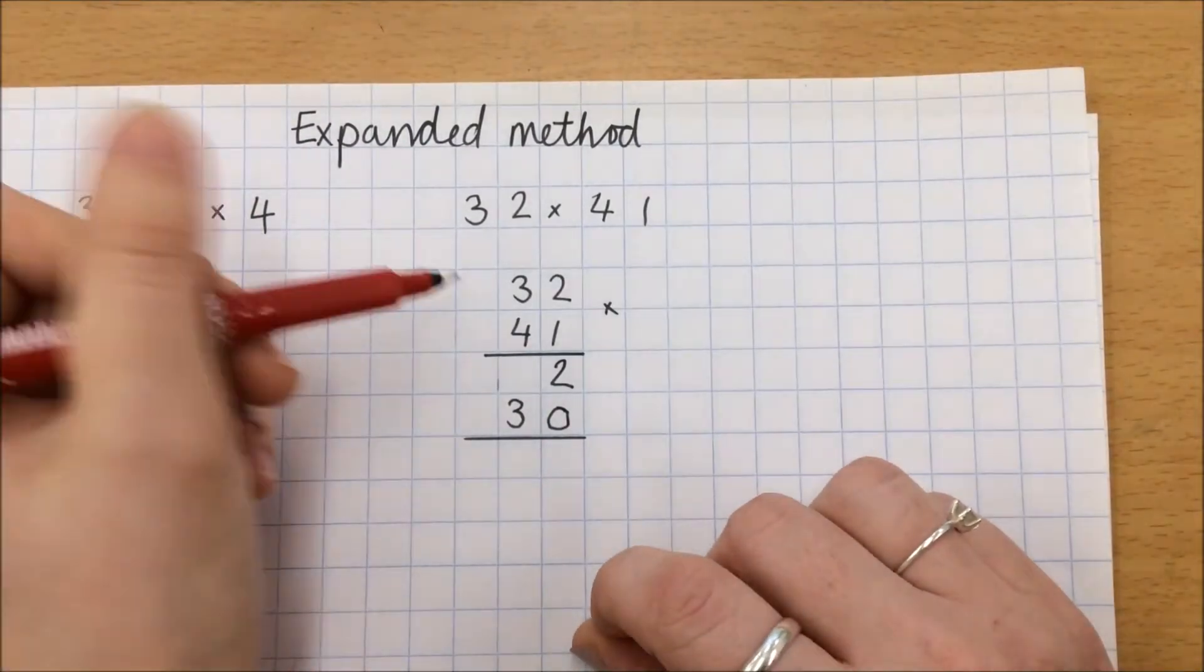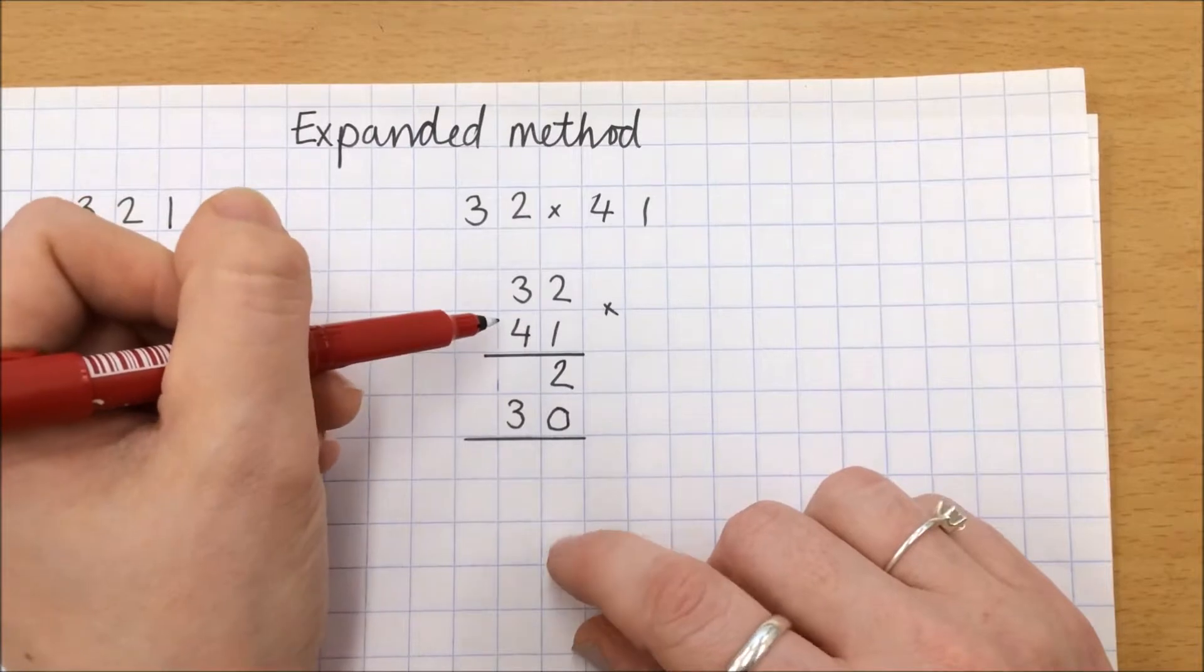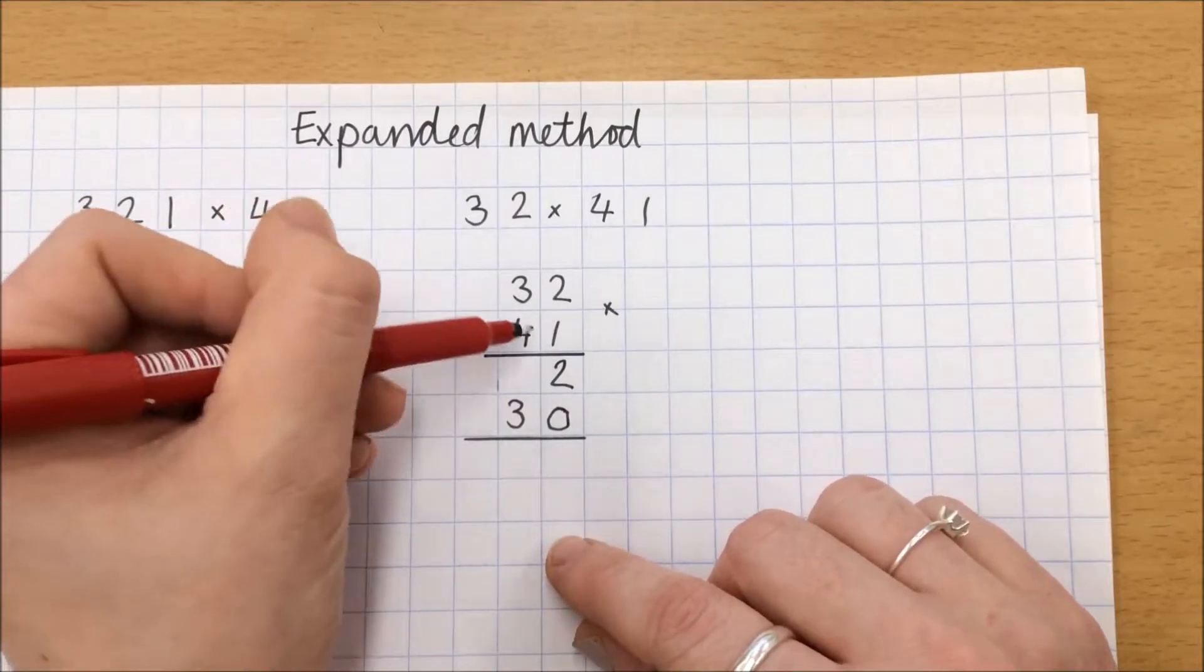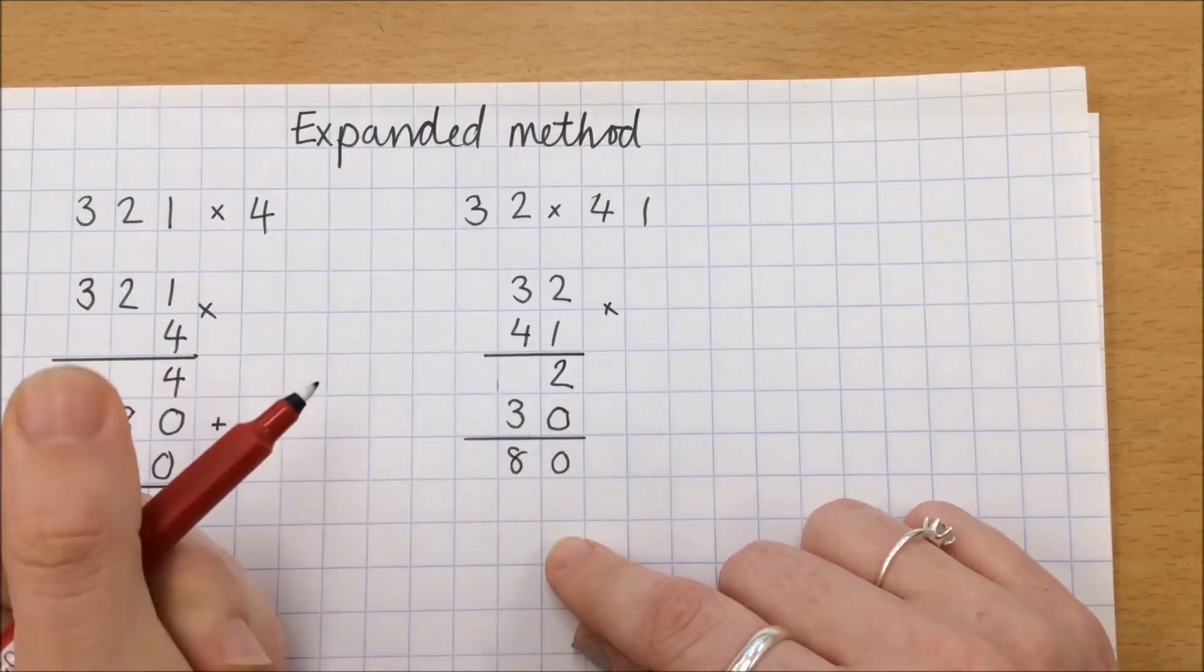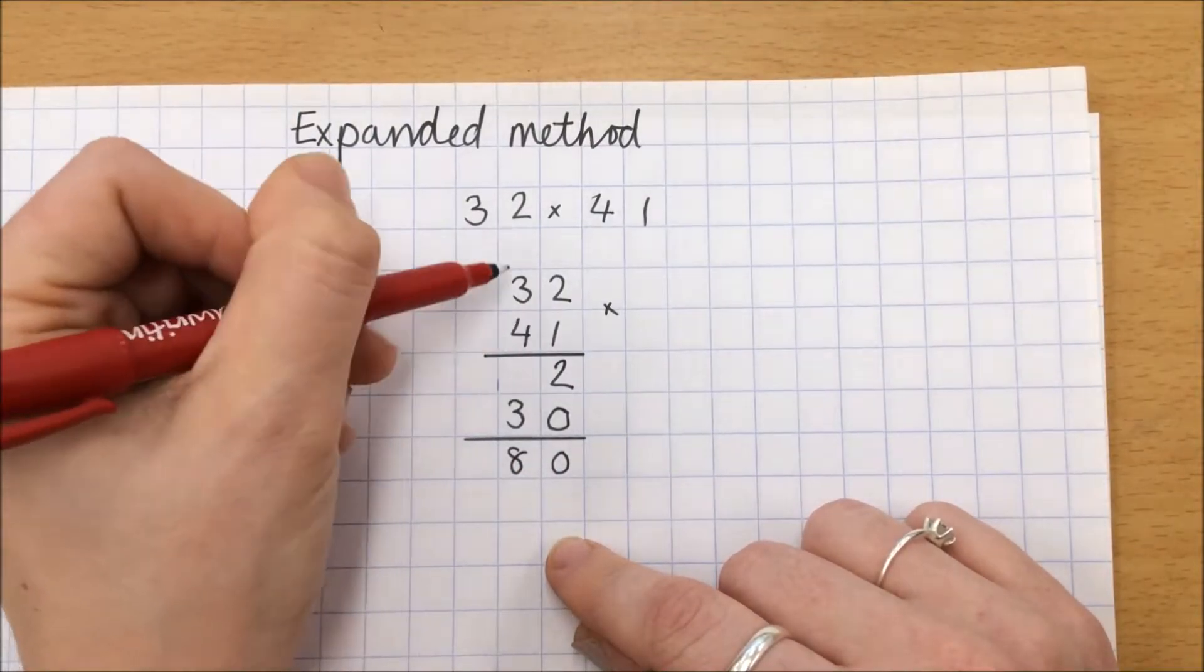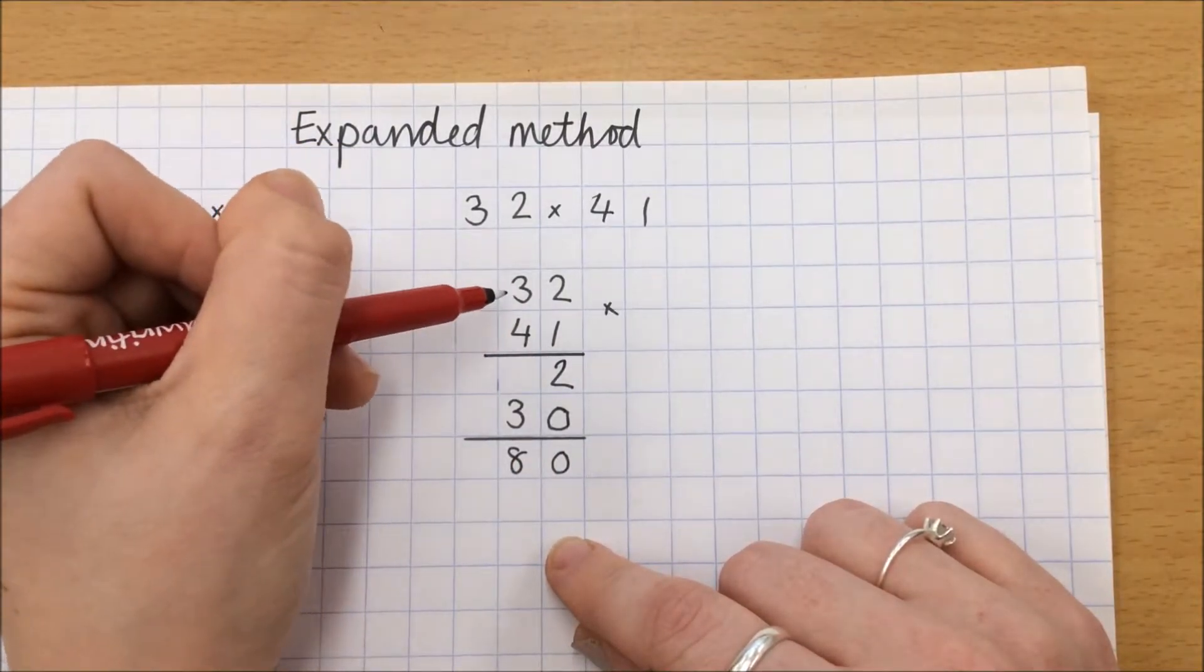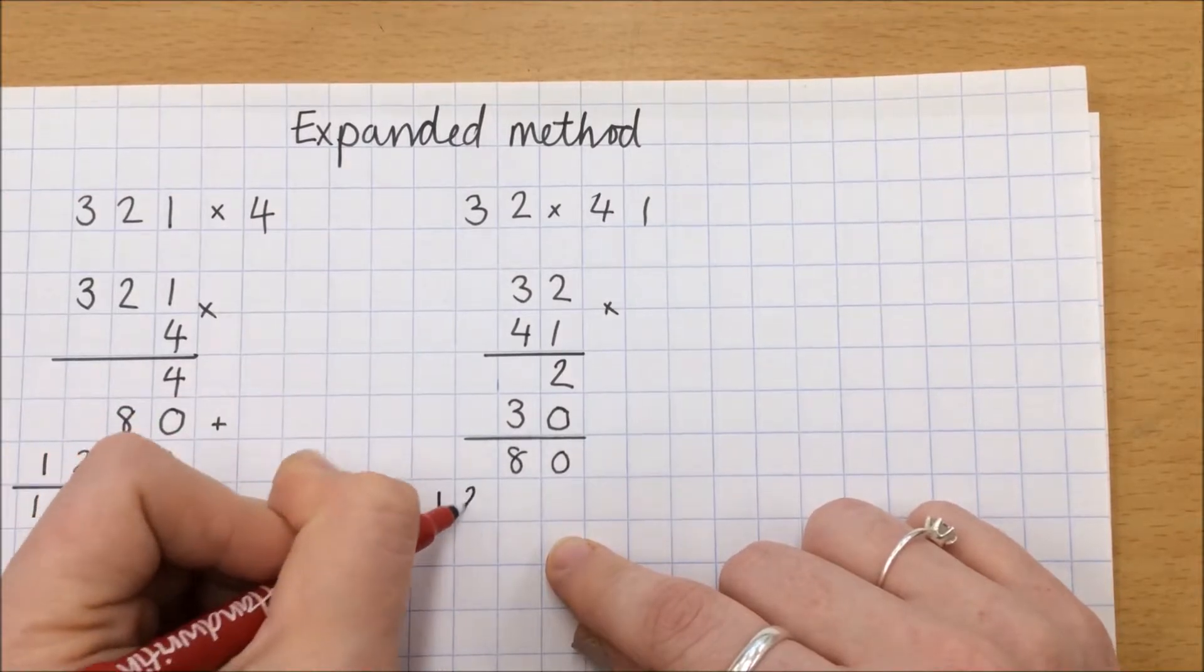Just to help themselves out and remember we're now dealing with the 4 tens, 40. 4 tens, 40 multiplied by 2 is 80. 40 multiplied by 30 is 1,200.